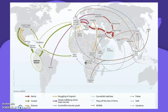Counterfeit consumer goods come a lot from Asia — China specifically — going to Europe. Counterfeit medicines again come a lot from Asia — India and China — going to Africa specifically. Wildlife trade, which is illegal, comes a lot from Southeast Asia and also from Southern Africa.